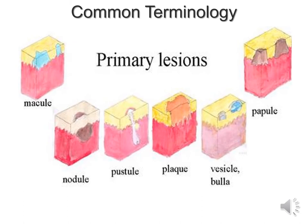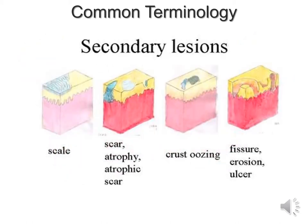Primary lesions include macules, nodules, pustules, plaque, vesicles, bullae, and papules. Secondary lesions could include scale — very dry skin — scars which could be atrophic, crusting or oozing, and fissures which can be eroding or ulcers.